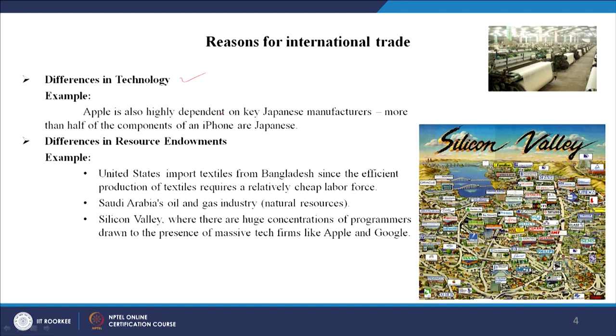Apple is highly dependent on key Japanese and Chinese manufacturers. More than half of the components of an iPhone come from Japan and China. Because technology differs between countries and someone has an advantage in it, they build and generate more products and can export them to others. That is the first reason for international trade.